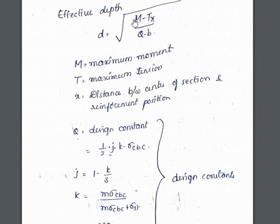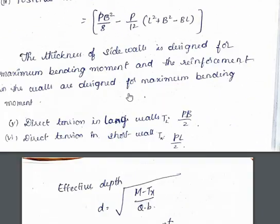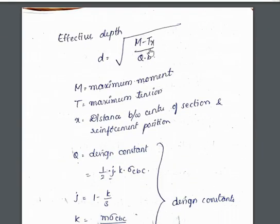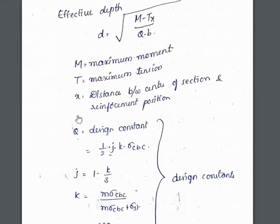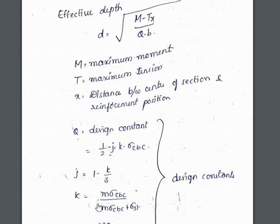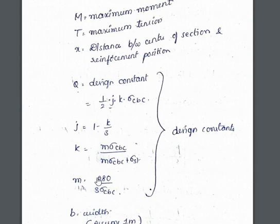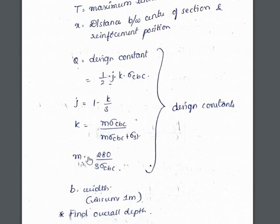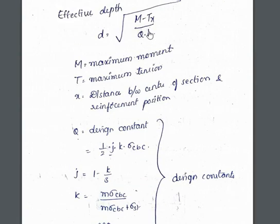The effective depth is found using: d = √[M − T×(X)] / (Q×b), where M is the maximum bending moment, T is the maximum tension, X is the distance between the center of section and reinforcement position, and Q is the design constant given by Q = (1/2) × j × k × sigma_cbc. J, K, and the modular ratio m = 280 / (3 × sigma_cbc) are standard design constants.